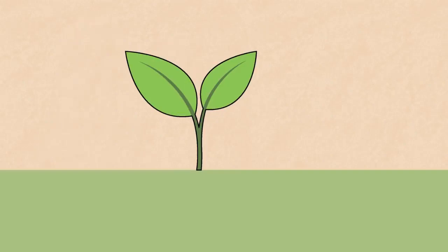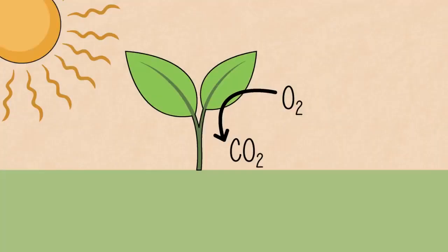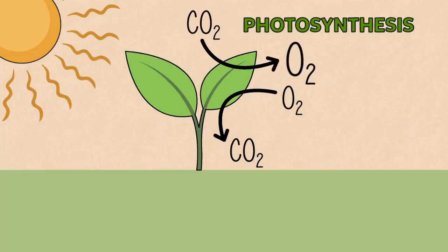Plants also respire, but you only notice it in the dark because in the sunlight they release more oxygen from photosynthesis than they use in respiration.